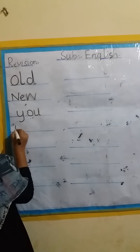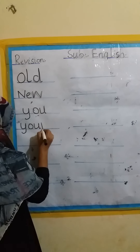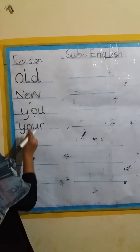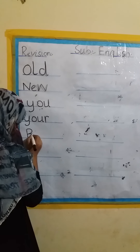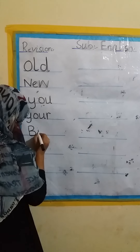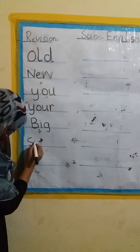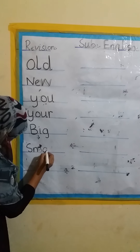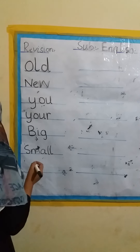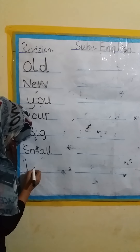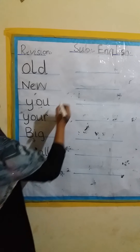And the next one is Y, U, R — your. And then the concept of big and small. After big and small, the concept of long and short.